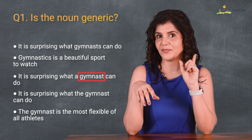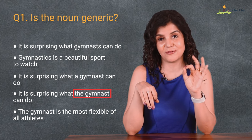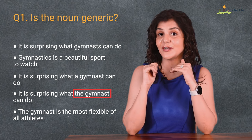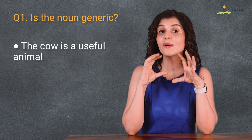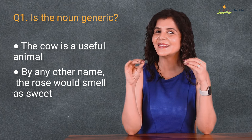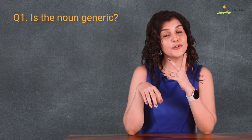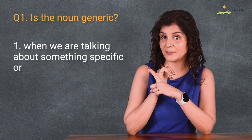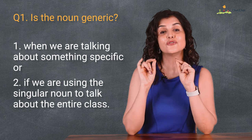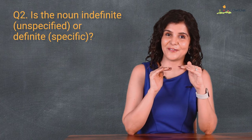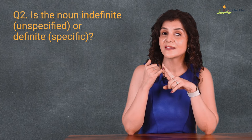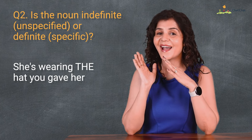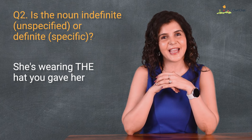In the third sentence, we use a singular count noun gymnast meaning any, so we use a. In the fourth sentence, we are no longer talking generically — we refer to a specific gymnast, so we use the. In the fifth sentence, the singular noun represents the entire class: the cow is a useful animal; a rose by any other name would smell as sweet. So the two uses of the are: when we're talking about something specific, or when a singular noun represents the entire class.